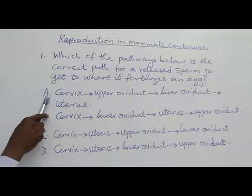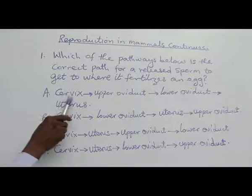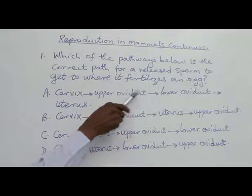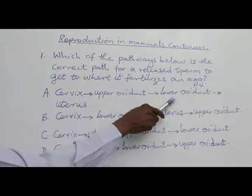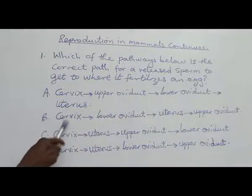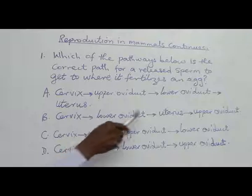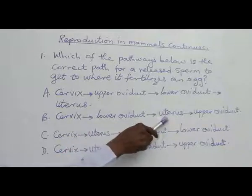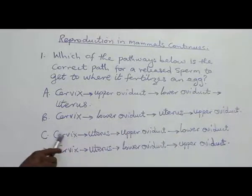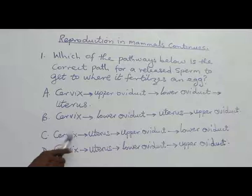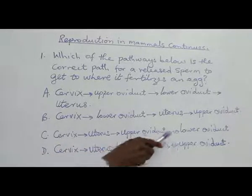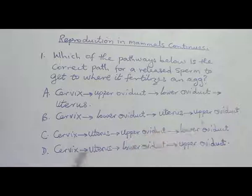Option A: Cervix to upper oviduct, to lower oviduct, and to uterus. Option B: Cervix to lower oviduct, to uterus, and to upper oviduct. Option C: Cervix to uterus, uterus to upper oviduct, then to lower oviduct.